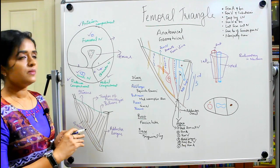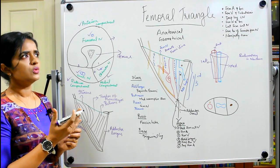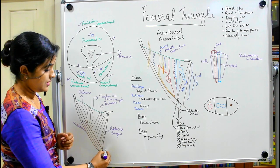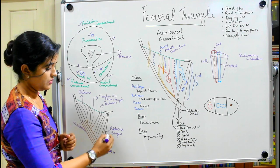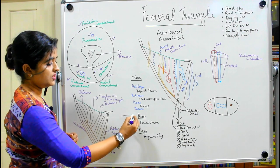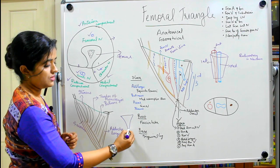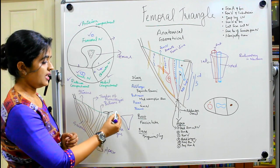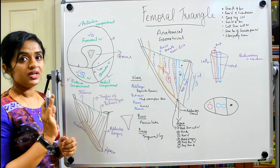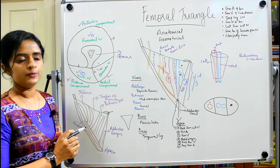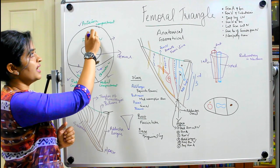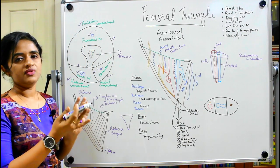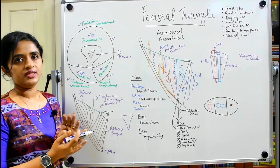The femoral triangle, as you know, is a triangle with its apex facing downwards. The apex faces downwards and the base is upwards. It lies in the anterior compartment of the thigh — the front of the thigh.